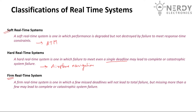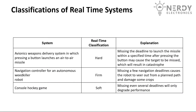Then we have firm real-time systems — not very commonly used for classification, but think of it as somewhere between hard and soft real-time. A firm real-time system is one in which a few missed deadlines will not lead to total failure, but missing more than a few may lead to complete or catastrophic system failure. For example, the ATM — if a customer experiences delay every time while withdrawing money it might lead to the bank losing the customer, which could be catastrophic for the bank's image.